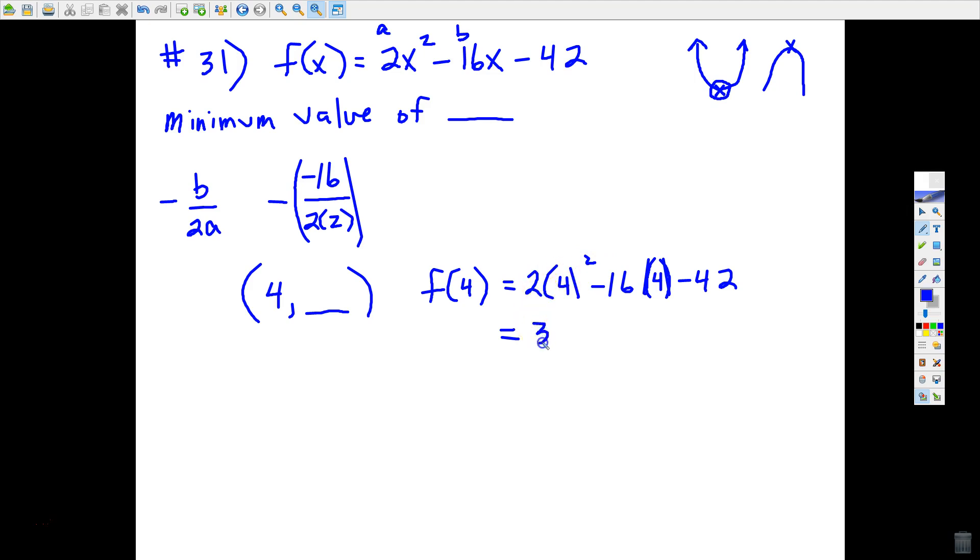16 times 4 is 64 minus 42. So 32 minus 64 is negative 32 minus 42. So it looks like we're going to get negative 74 as our minimum value, which is also another way of saying the y-coordinate of the vertex.